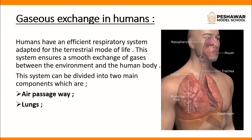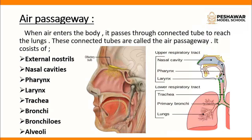Now we are moving towards gaseous exchange in humans. Humans have an efficient respiratory system adapted for the terrestrial mode of life, which ensures a smooth exchange of gases between the environment and the human body. This system can be divided into two main components: air passageway and lungs. When air enters the body, it passes through connected tubes to reach the lungs. The air passageway consists of external nostrils, nasal cavities, pharynx, larynx, trachea, bronchi, bronchioles, and finally alveoli.